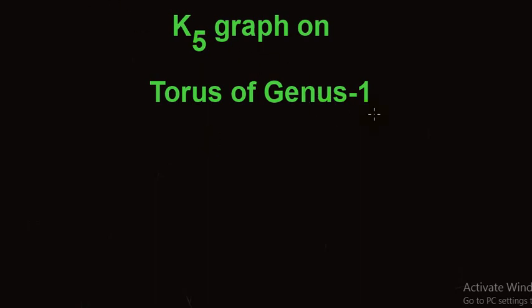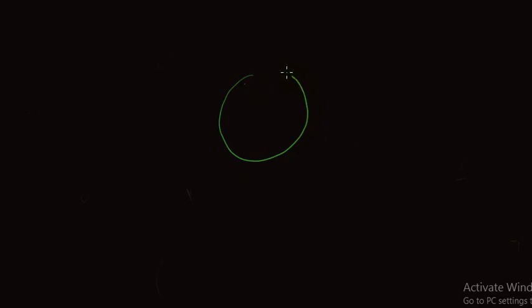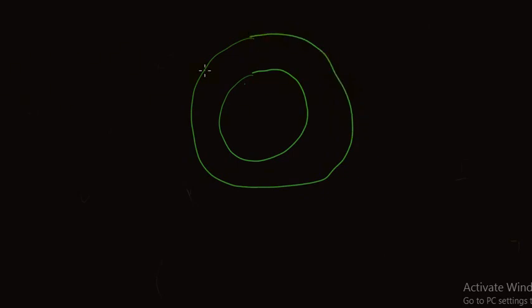Welcome students. In this video lecture we are going to learn how to draw the complete graph of order 5 on a torus of genus 1. As we know, K5 is not planar — we cannot draw K5 on a plane. But we can draw K5 on a torus of genus 1. A torus of genus 1 is basically the surface of a donut, and the surface of a tube type shape is an example of a torus of genus 1.